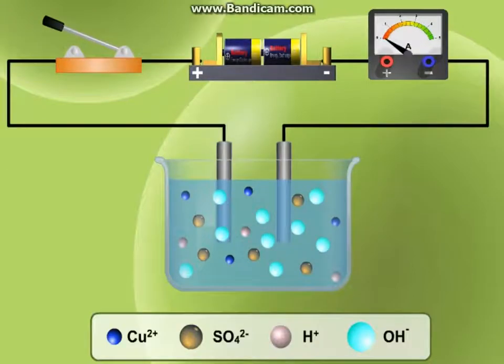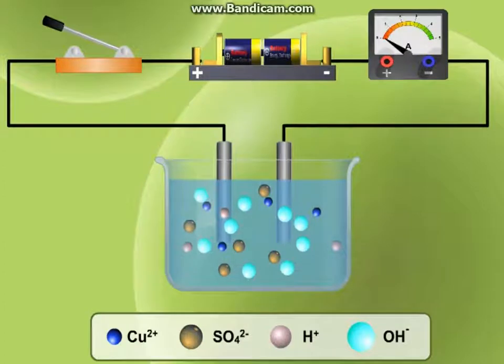Electrolysis of copper-2-sulfate solution. Copper-2-sulfate solution consists of copper-2 ions, sulfate ions, hydrogen ions, and hydroxide ions.